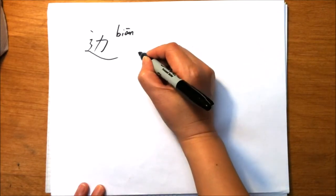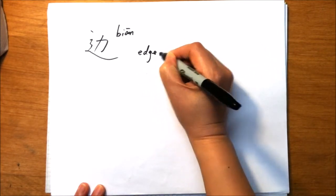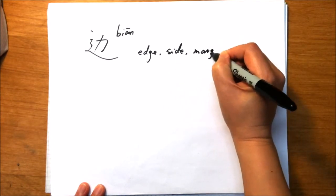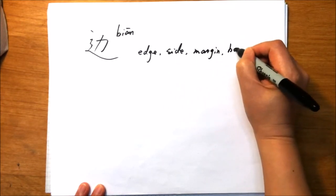边. The basic meaning of character 边 is edge, side, margin, or border.